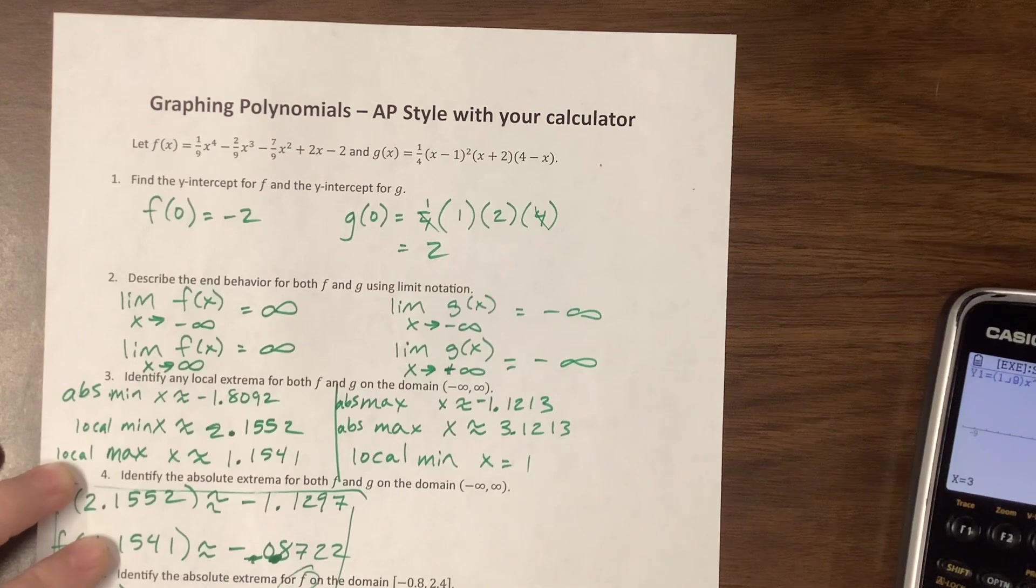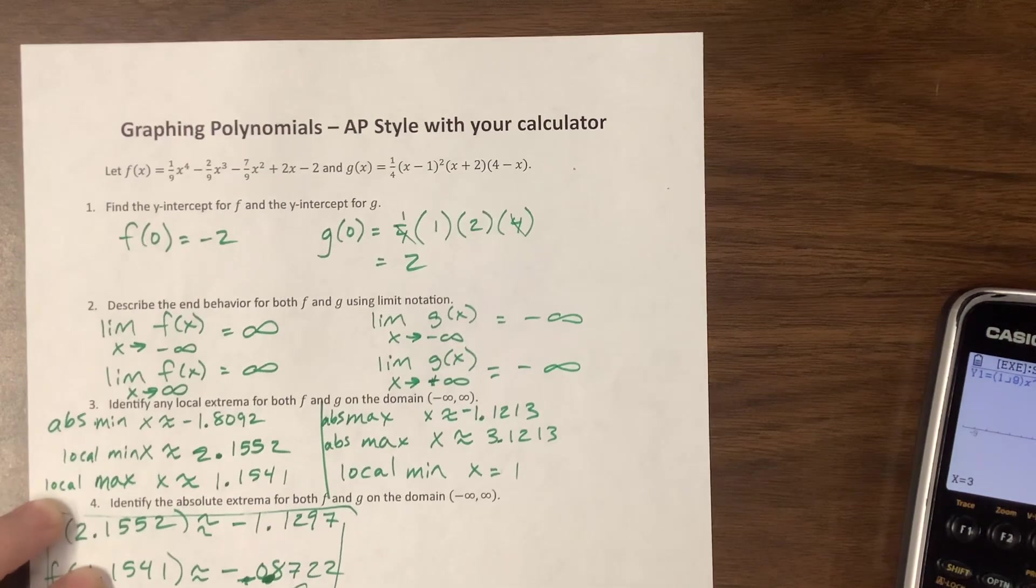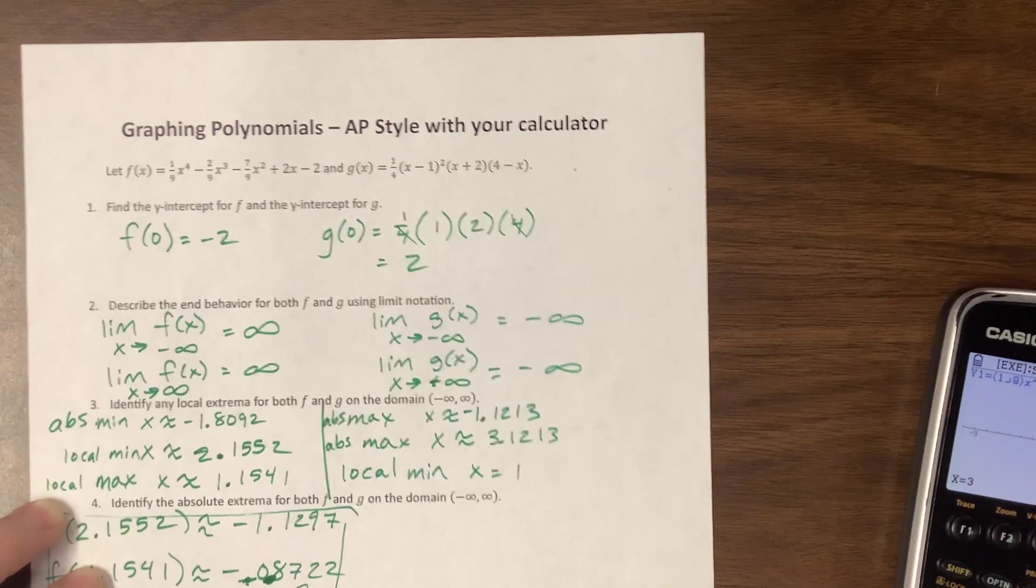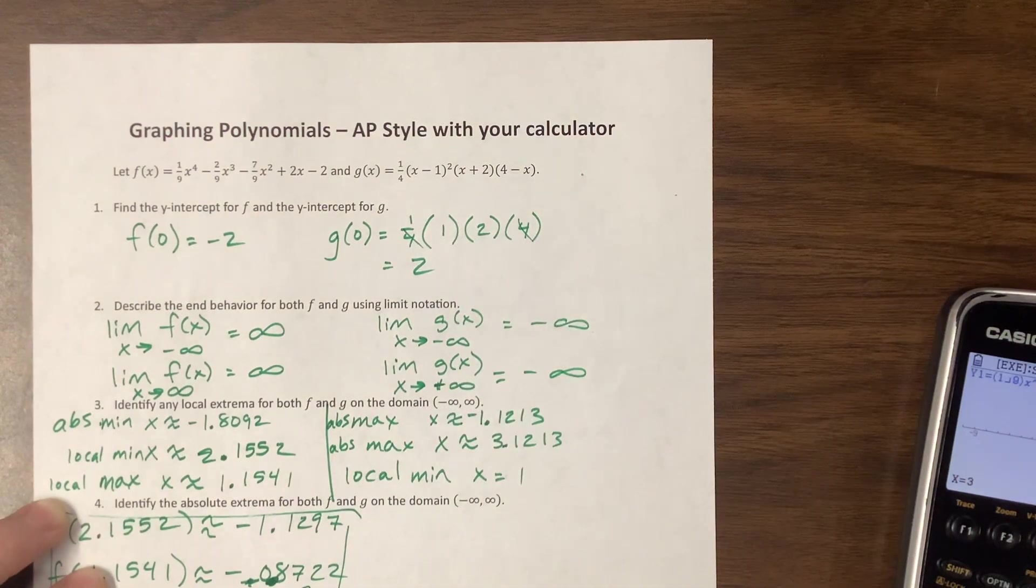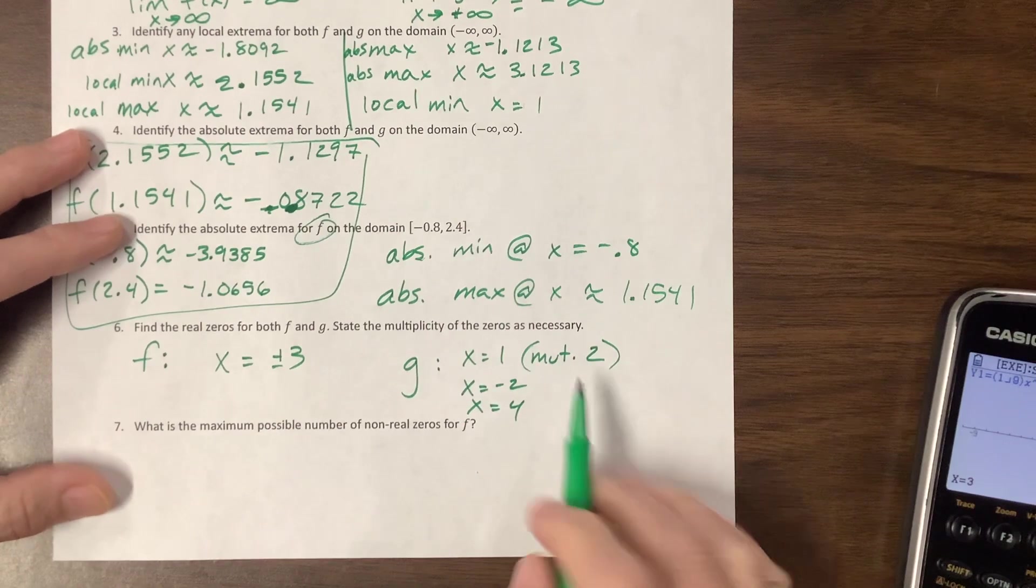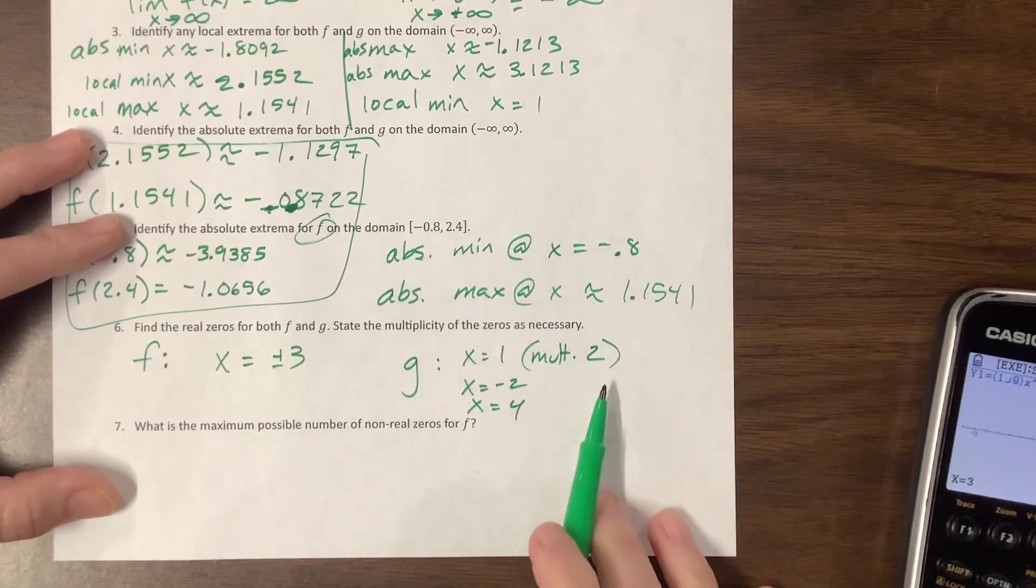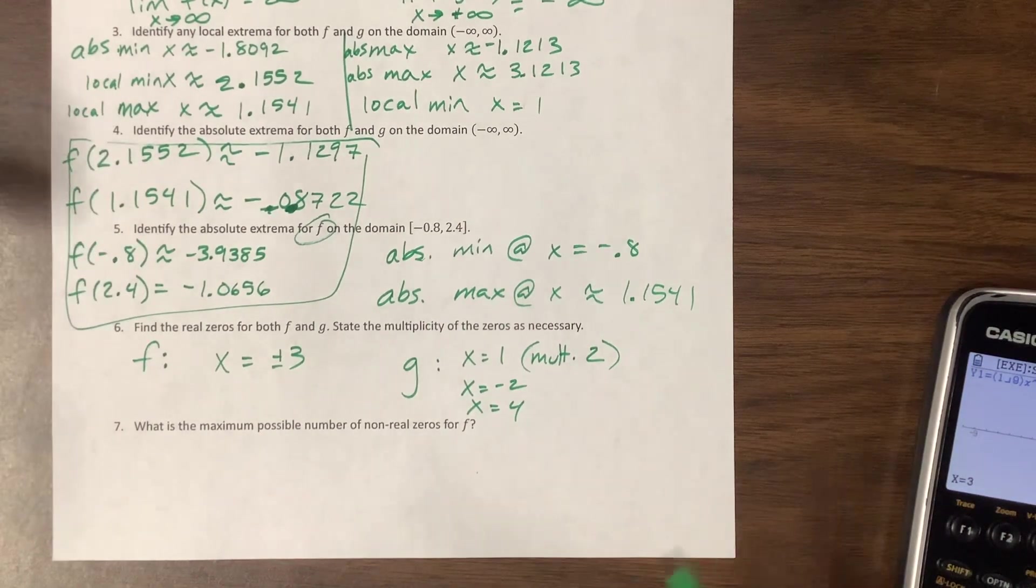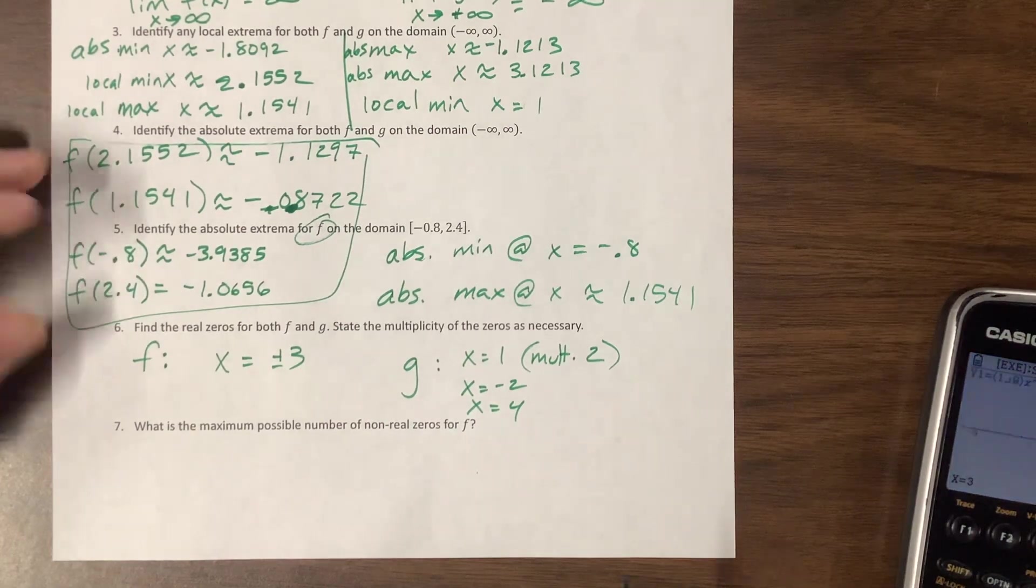Looking at for g, I can just look at the equation. I have a zero when x is equal to one. It has a multiplicity. You can't see what I'm writing, but I'm letting you see the equation. It has a multiplicity of two, x equals negative two and x equals positive four. I would say in parentheses, this one has multiplicity of two. If I don't write the multiplicity, it's implied to be one.